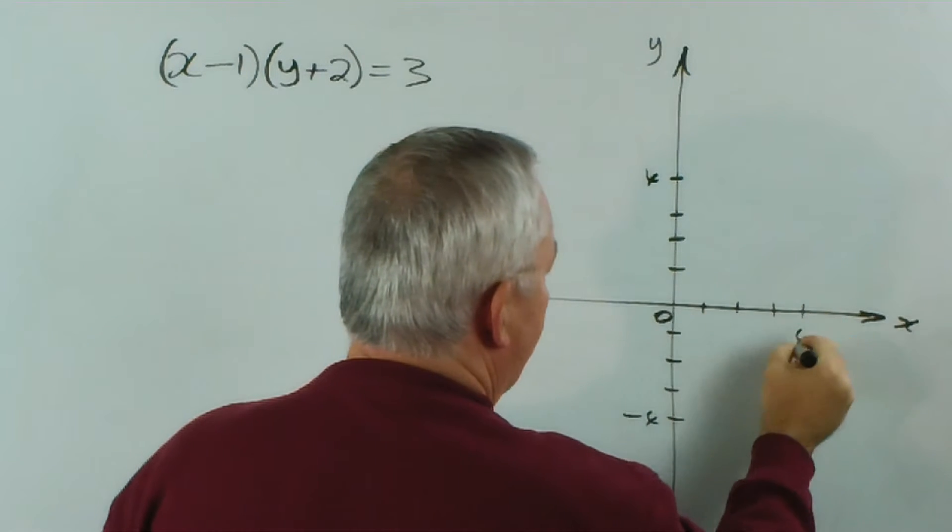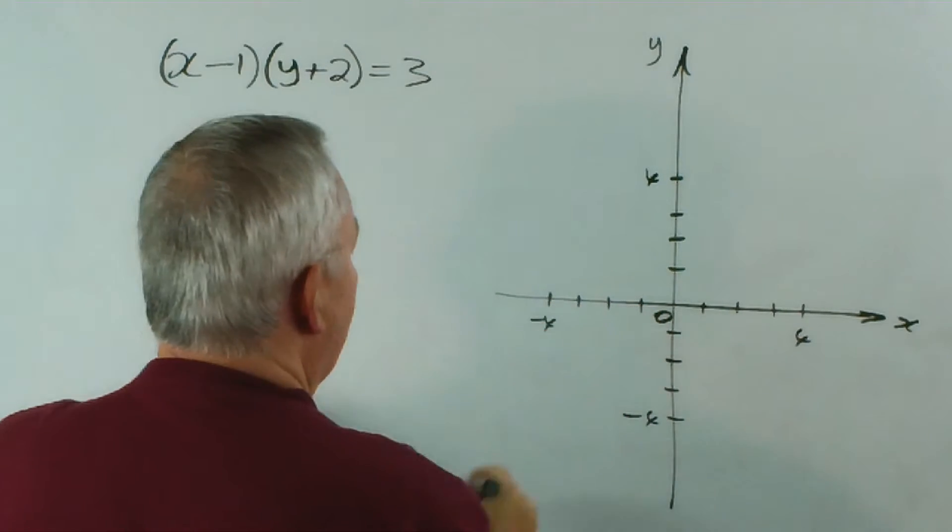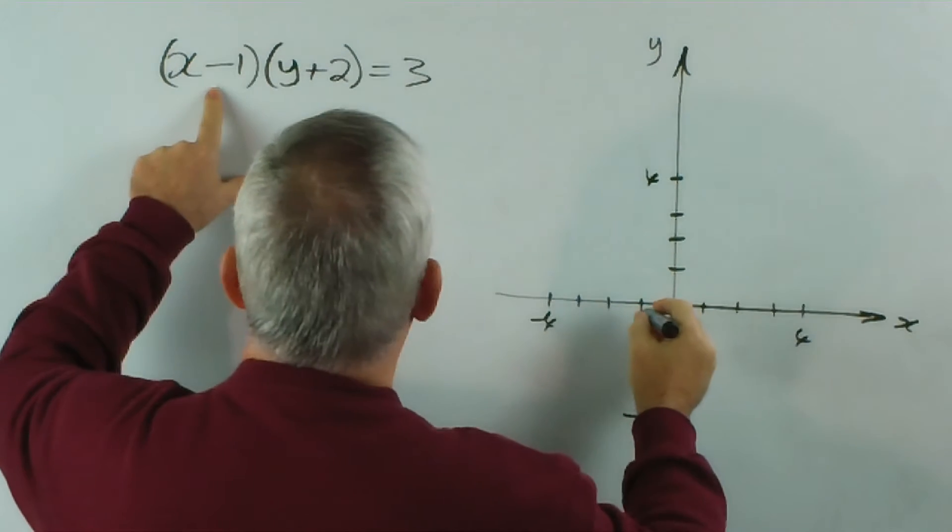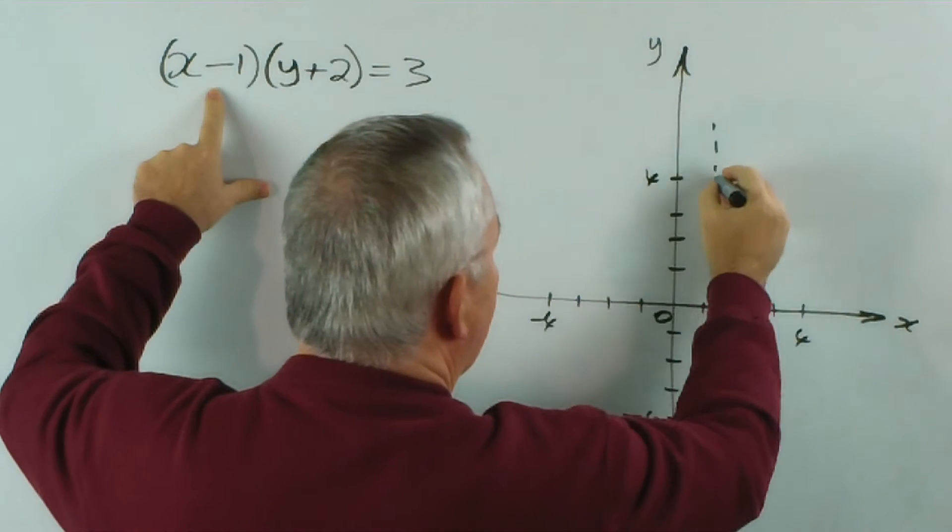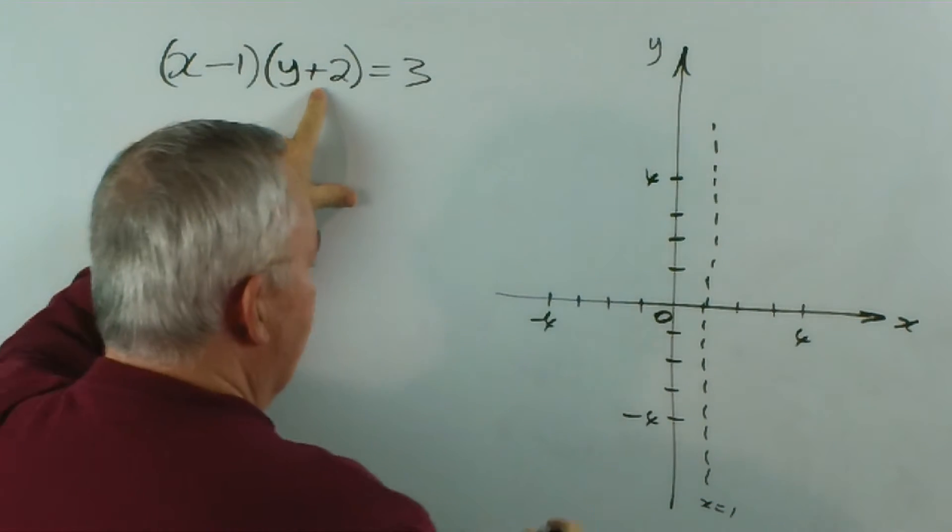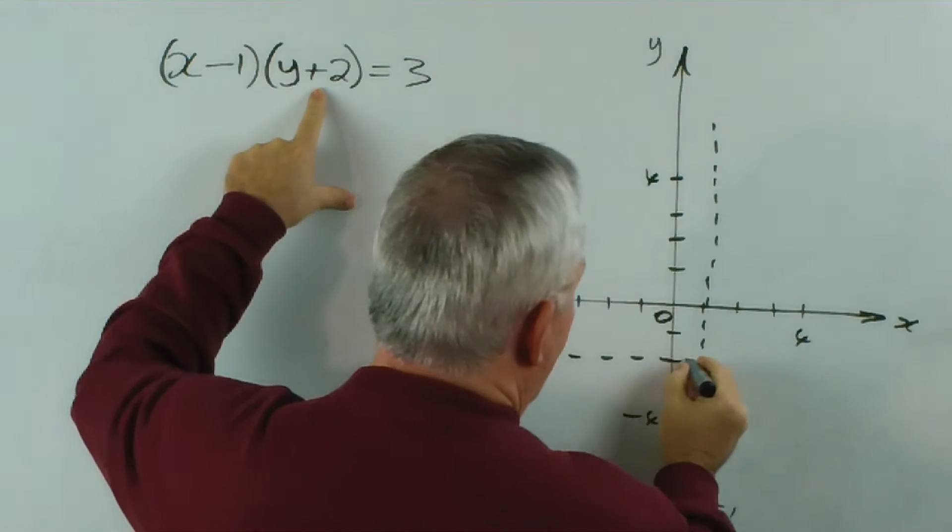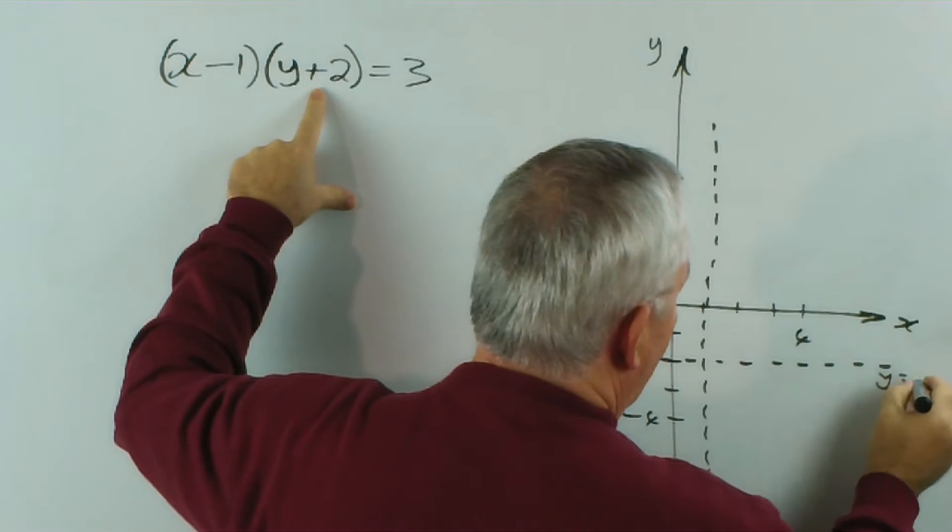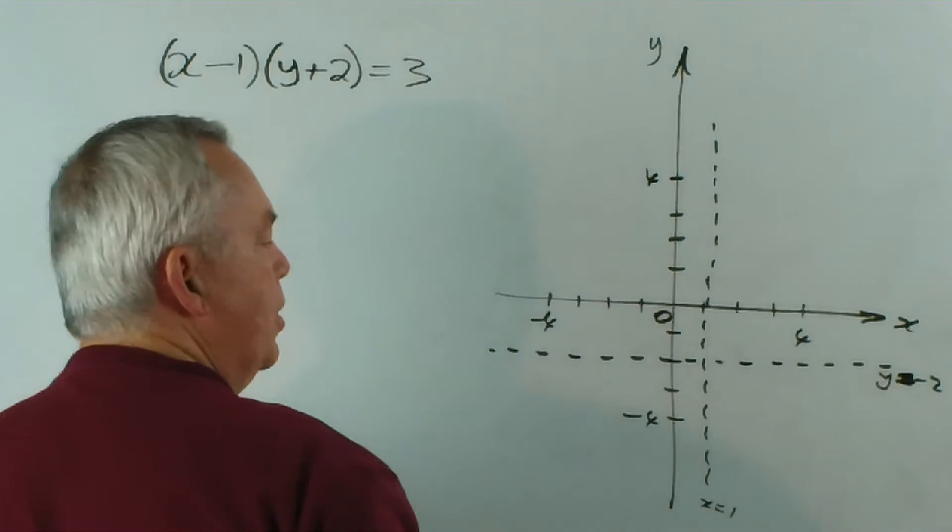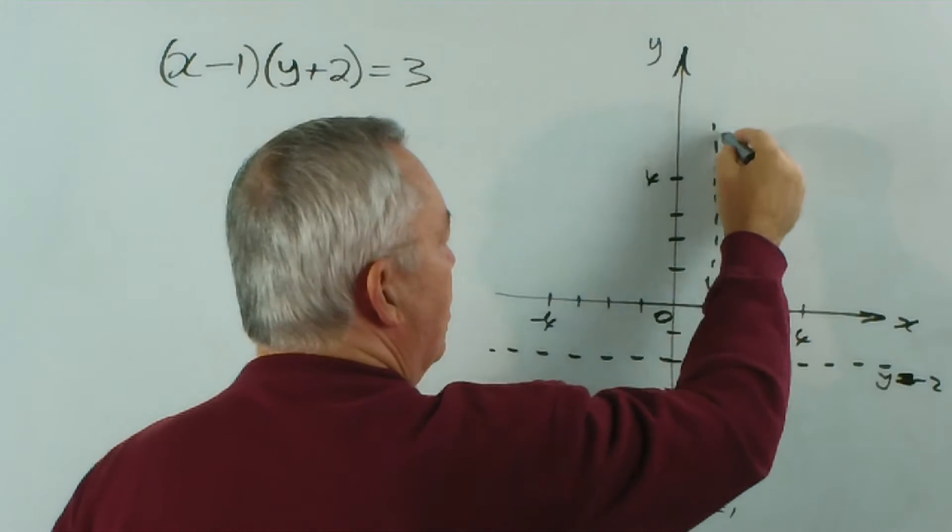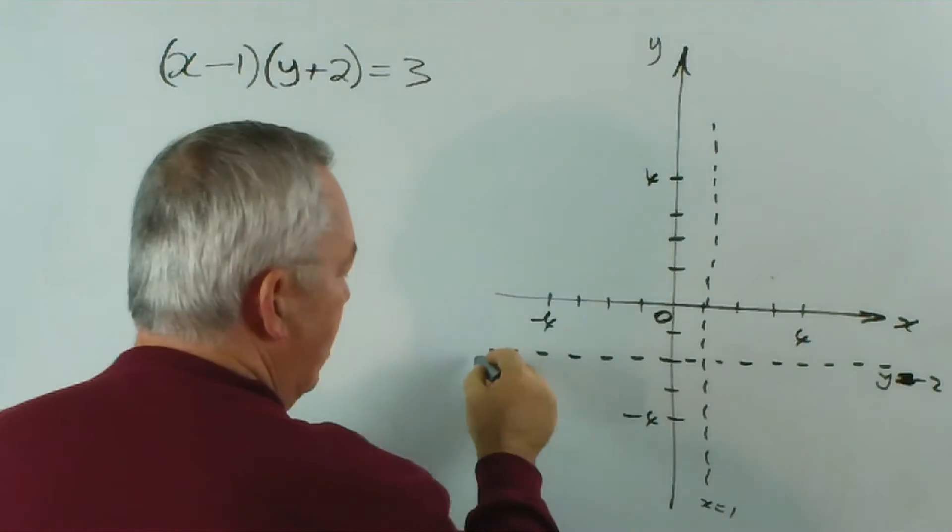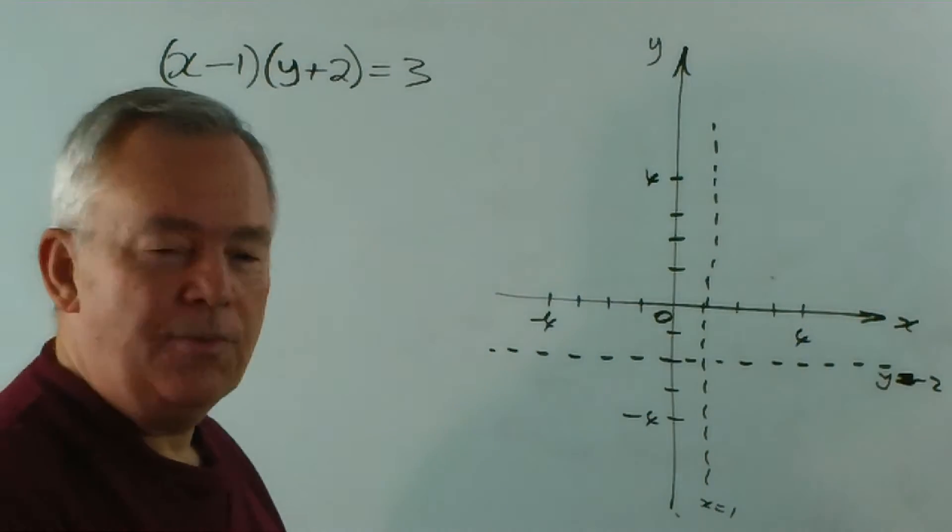So if we draw this particular hyperbola... 1, 2, 3, 4... and 1, 2, 3, 4... at x equals 1 we have an asymptote and at y equals negative 2 we have an asymptote. And you know that our hyperbola fits in here and in here, that is, if you watched our previous videos.